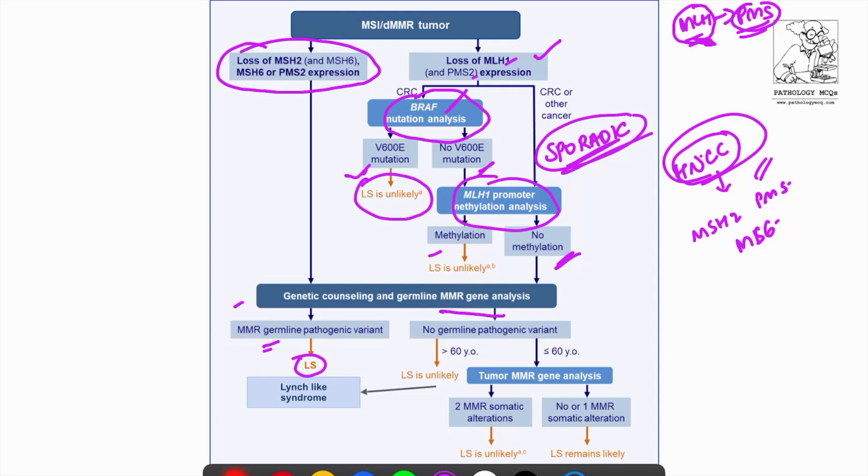So that is another one, a unique syndrome, a unique condition which is known as Lynch-like syndrome, where you will have all the features of Lynch syndrome. You will have all the tumors. You will have ovarian carcinoma, endometrial carcinomas, and you might have colorectal carcinomas and you will have all the clinical features and also the hereditary features of Lynch syndrome, but still you will not find any germline MMR mutations.